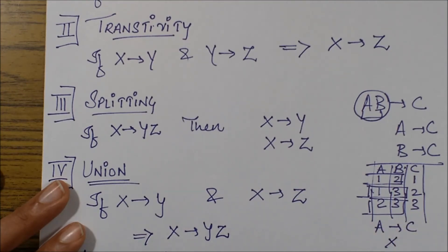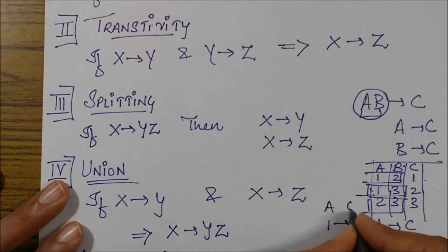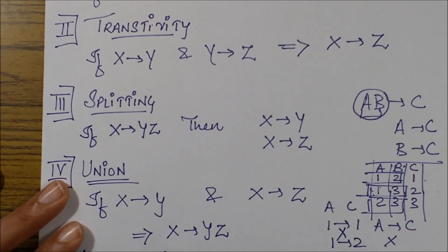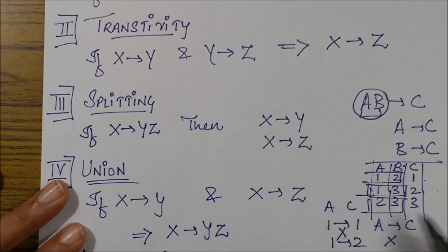If I try to map C with only A through left hand side, if I say A determines C, that would be wrong. Why? Because I have two values of 1 present in A pointing to two different values of C. So 1 goes to 1 and 1 also goes to 2. Therefore, a dependency does not hold from this direction.